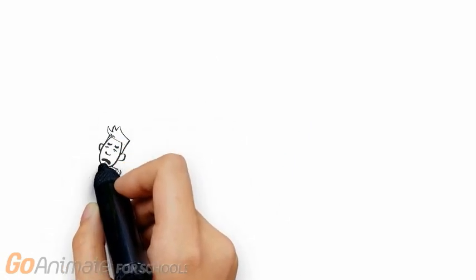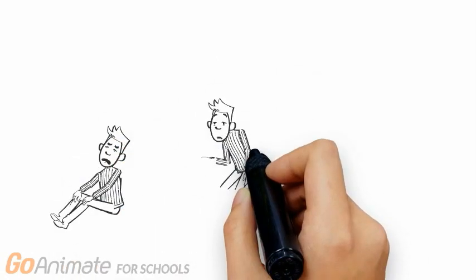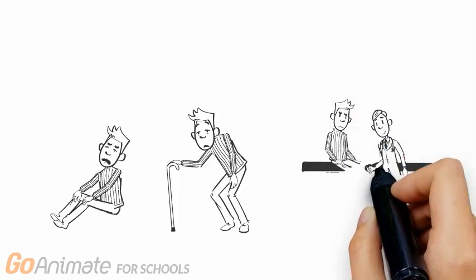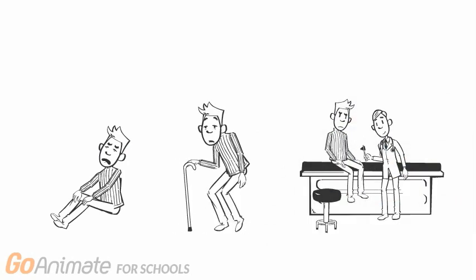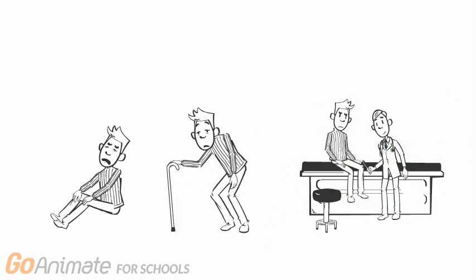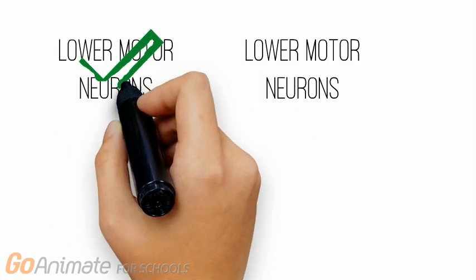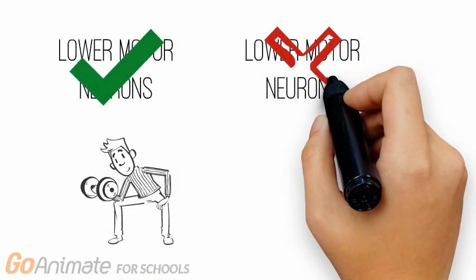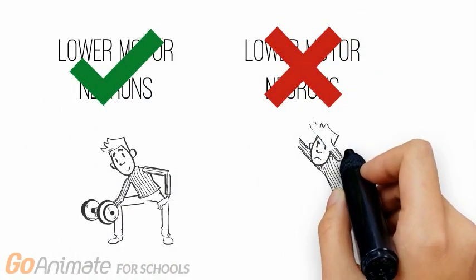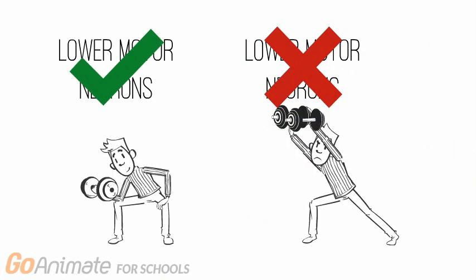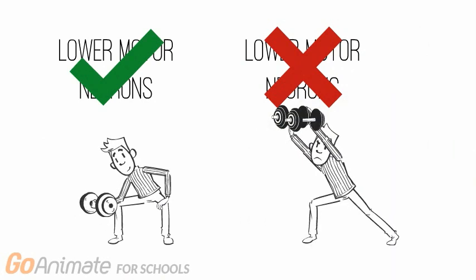Disruptions in signals between upper and lower motor neurons can cause limb muscles to develop stiffness, movements to become slow and effortful, and tendon reflexes to be overactive. This eventually leads to the loss of the ability to control voluntary movement. Damage to the lower motor neurons specifically can lead to muscles not functioning properly, as they are direct messengers that tell the muscles to contract.